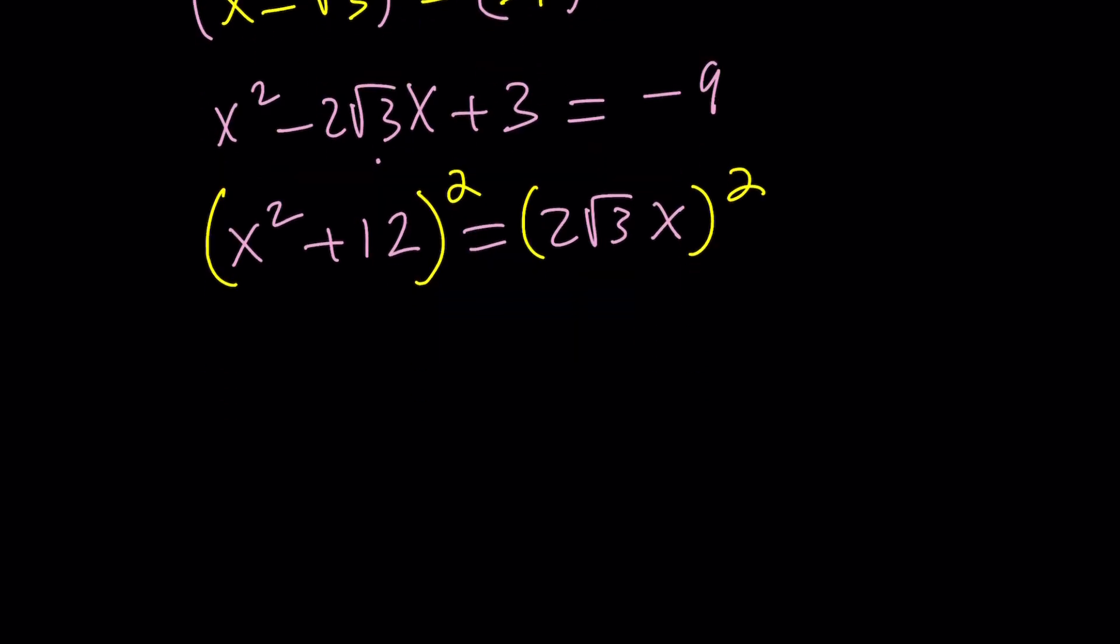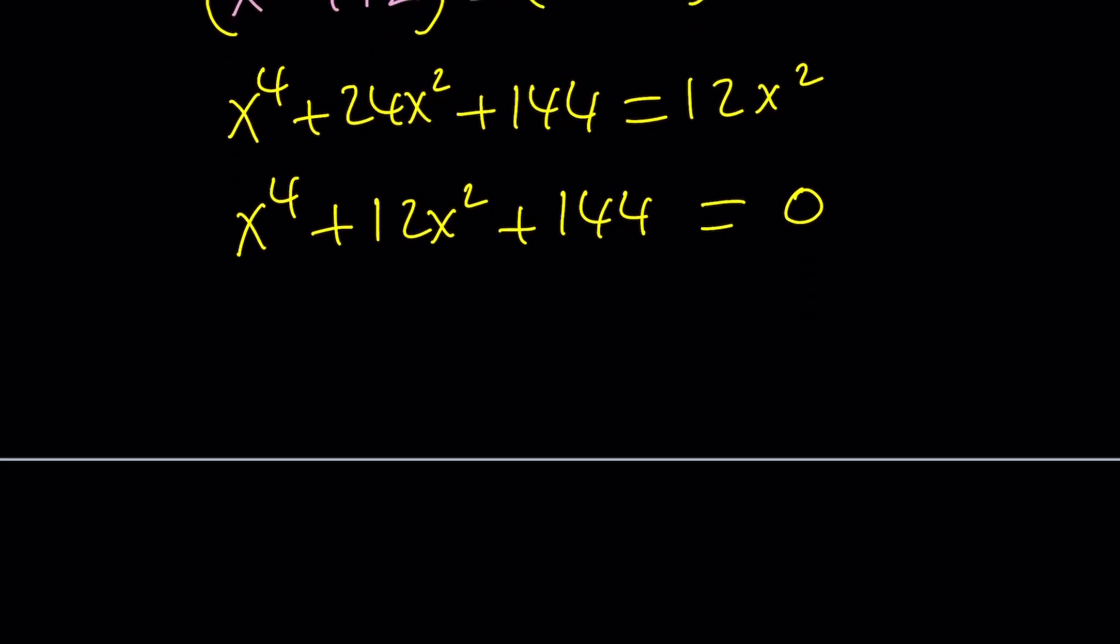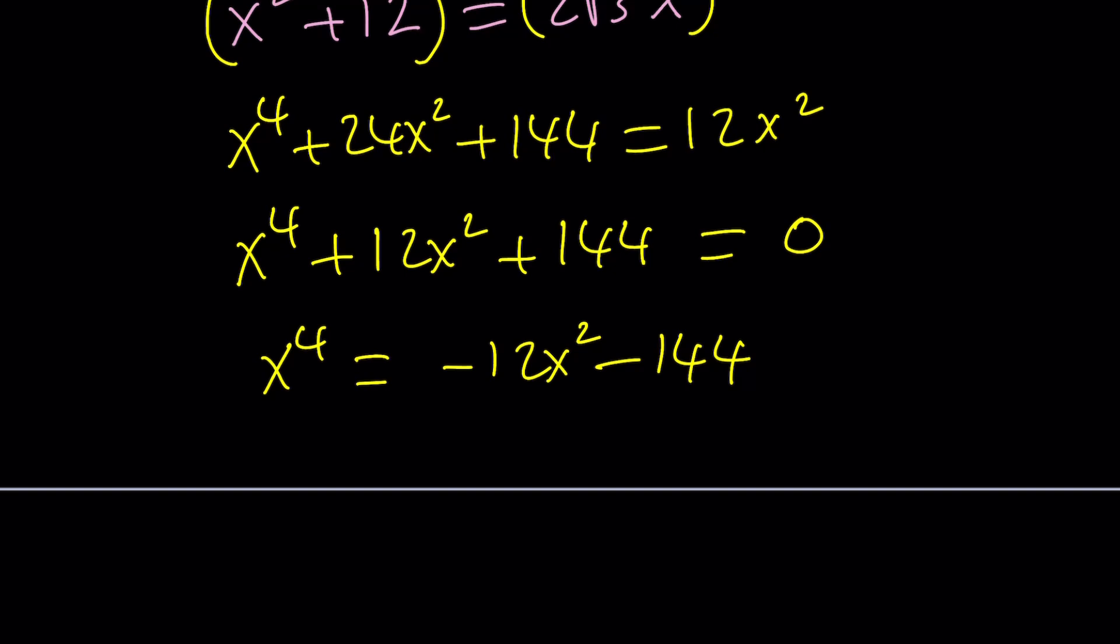Let's bring the negative 9 over, so that becomes x squared plus 12, and isolate the radical. Square both sides one more time. From here, we should be getting x to the 4th plus 24x squared plus 144 equals 2 root 3 squared is 12x squared. Bringing the 12x squared over gives me x to the 4th minus 12x squared plus 144 equals 0. So what am I going to do with this quartic equation? We got some type of relationship. I know that x to the 4th can be written as negative 12x squared minus 144. If you're trying to raise x to the 12th power, I could write it as the 4th power then to the 3rd power.